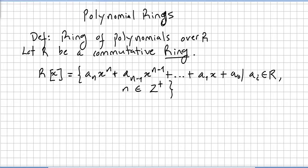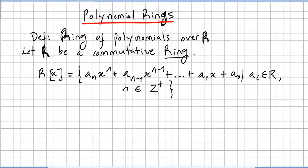This video is about polynomial rings, opening a new chapter. We begin with the definition of the ring of polynomials over R, where R is not the real numbers — let R be a commutative ring.